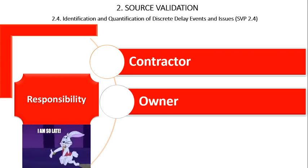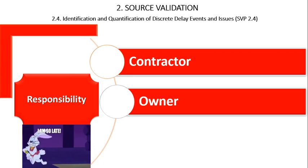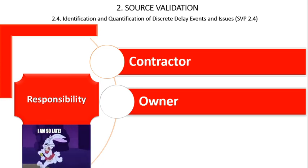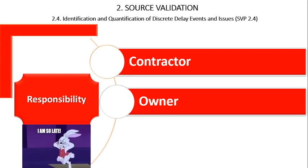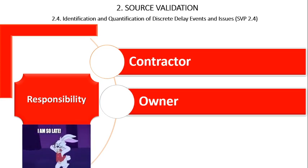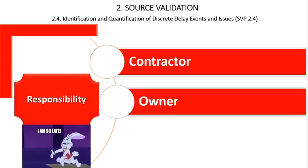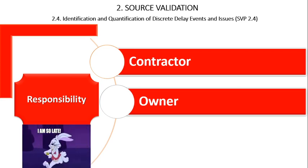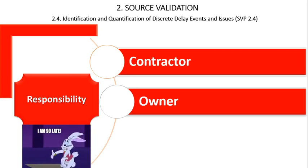Owner delay is any delay event caused by the owner, or the risk of which has been assigned solely to the owner. Examples of owner delay events include, but are not limited to: delays resulting from change orders, extended submittal review, directed suspension of work, delayed owner-furnished equipment, differing site conditions, and defective contract documents.